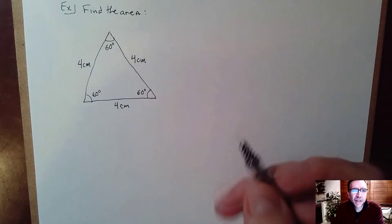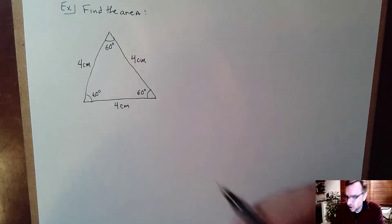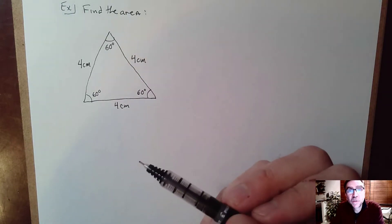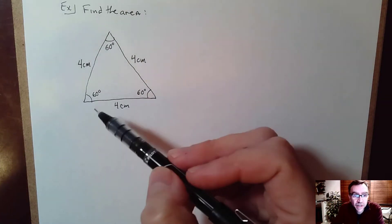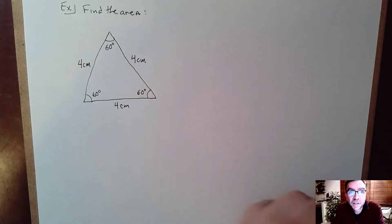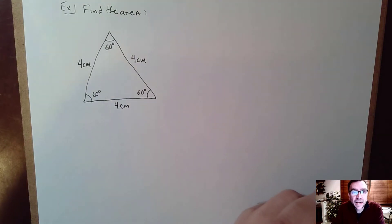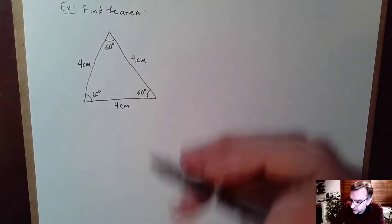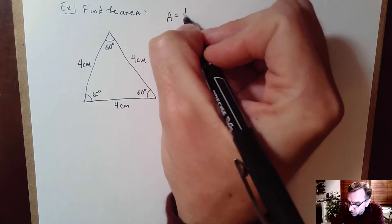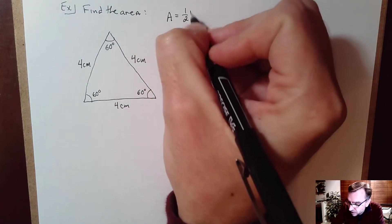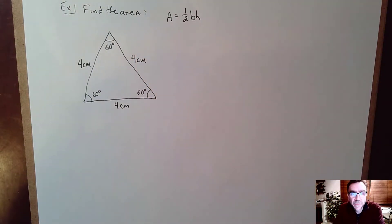Here we have an equilateral triangle where all the sides measure 4 centimeters. We also know for an equilateral triangle, all the angles measure 60 degrees. They're asking us to find the area. The formula for the area of a triangle is 1 half base times height.